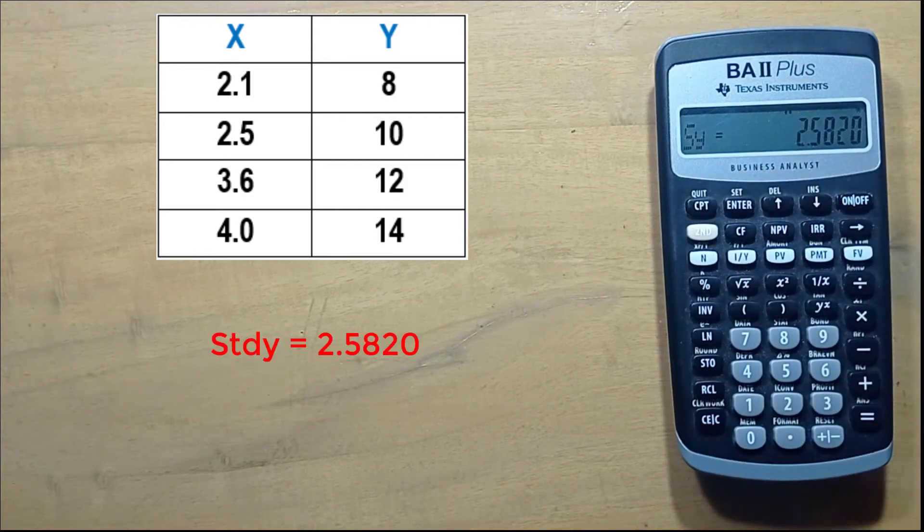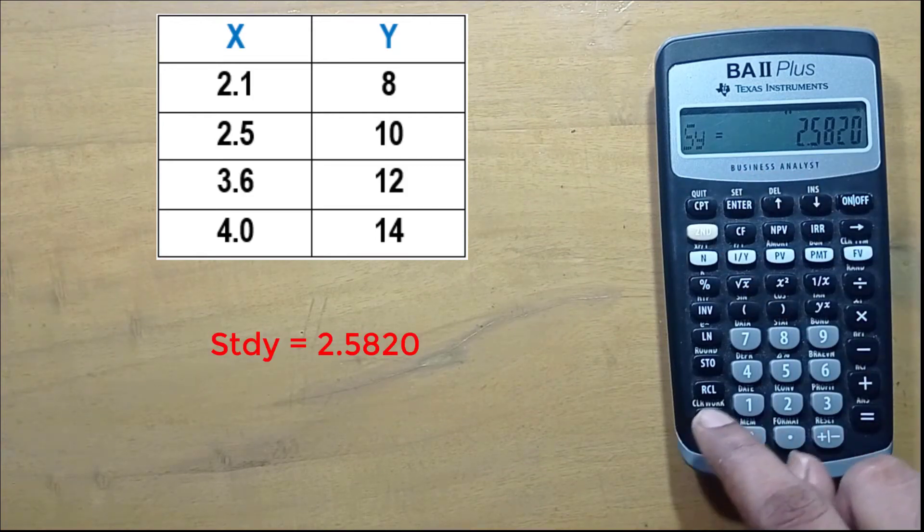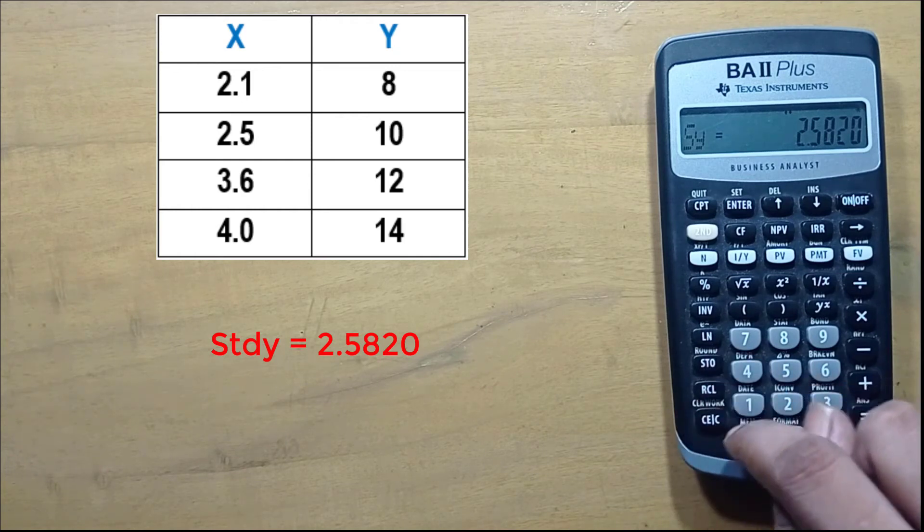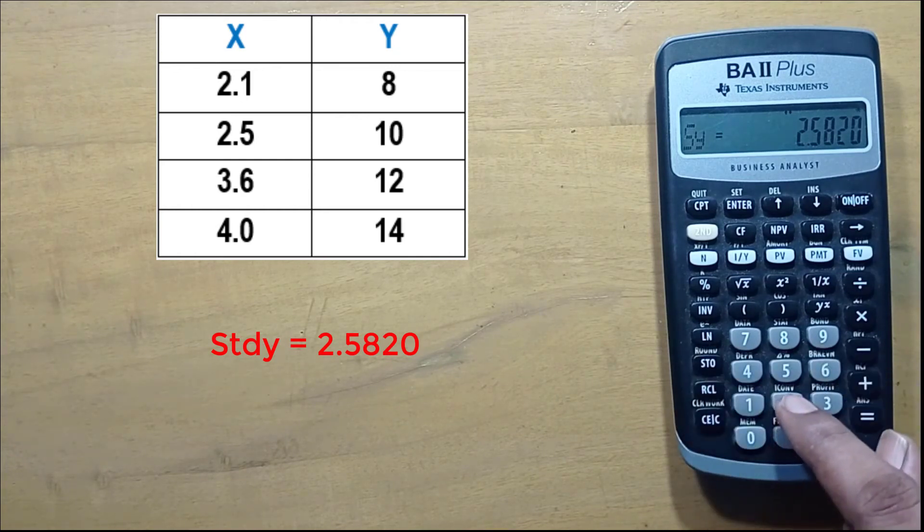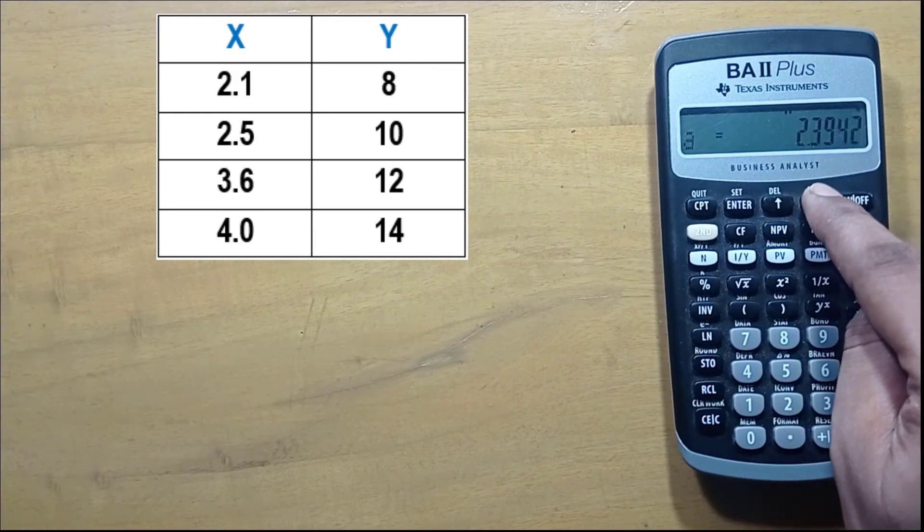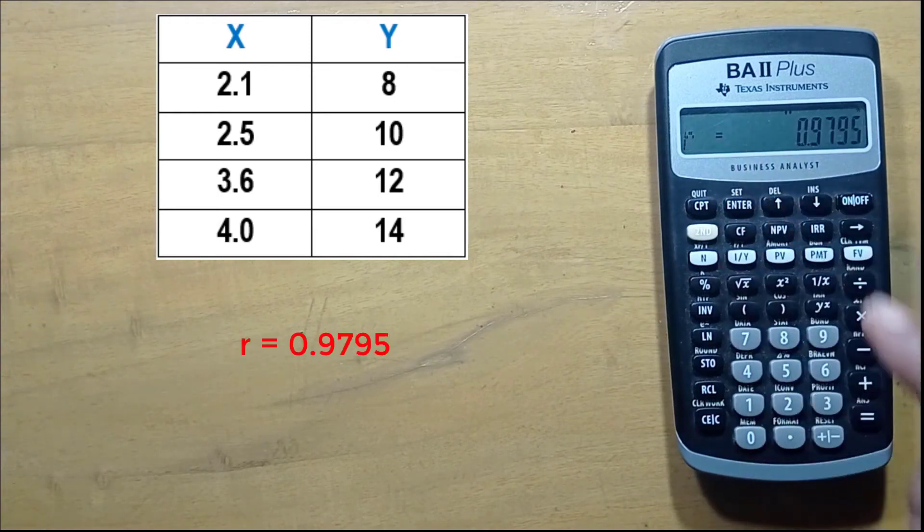This is our standard deviation for y. We have to save it as well, so press STO and 2. We need r. This is our value, so press STO and 3.